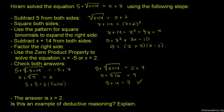Using the Zero Product Property, we set each factor equal to zero: x + 5 = 0 and x - 2 = 0.